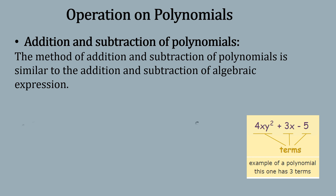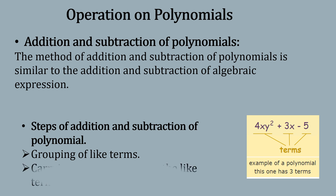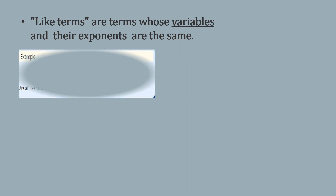To solve addition and subtraction of polynomials, there are few steps to follow. The first step is grouping of like terms, and the second is carrying out the operation on the like terms. Now what are like terms? Like terms are the terms whose variables and exponents are the same.